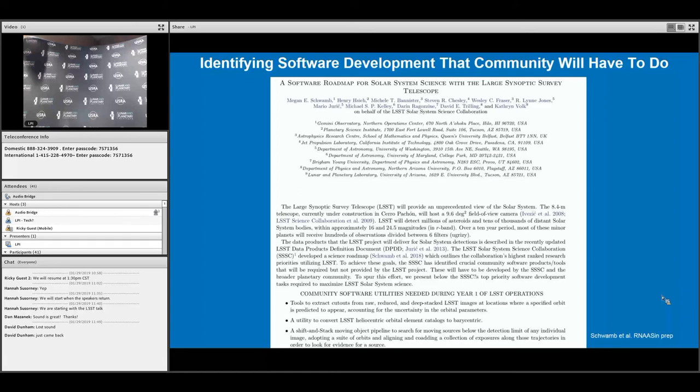We're working on this software roadmap that should be submitted to the AAS research notes at the end of February. This is telling the community what we think are the highest priority tasks that when LSST turns on in 2022, the community should have ready to go to apply to LSST data so we're ready to handle the data deluge. And what things we need afterward that are less important to have right away but still crucial.